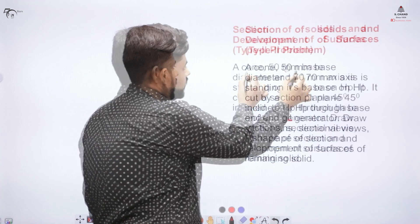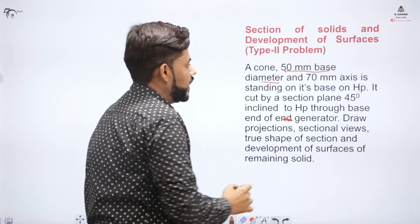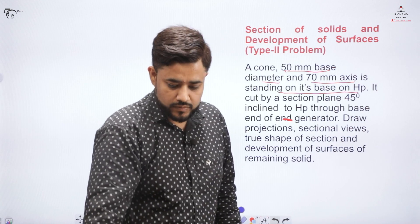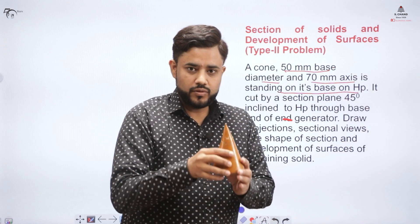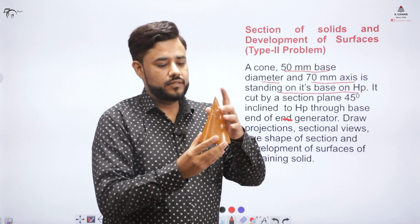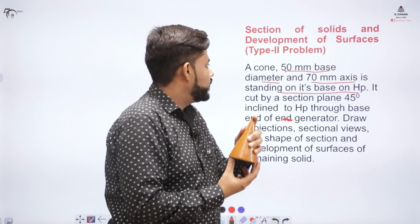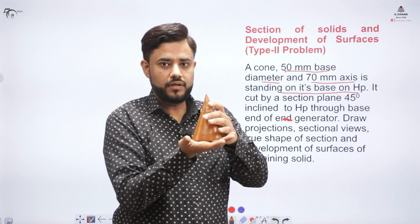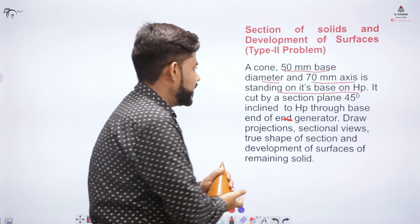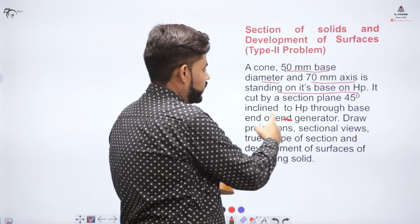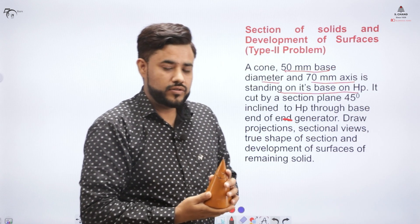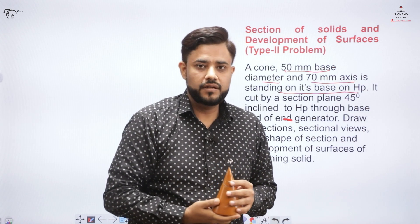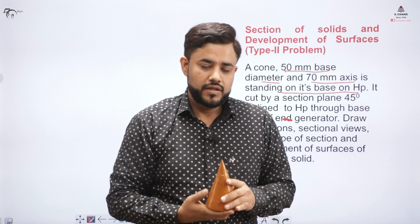The problem states: there is a cone with a 50mm base diameter and a 70mm axis, standing on its base on the HP. It is being cut by a section plane inclined at 45 degrees to the horizontal plane. Since the horizontal plane is mentioned, the sectional plane will appear in the front view.